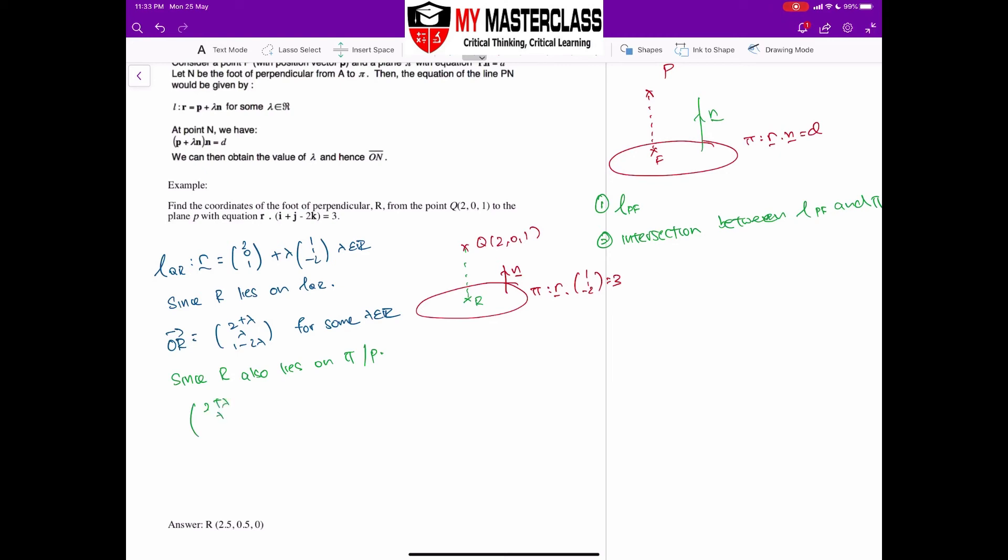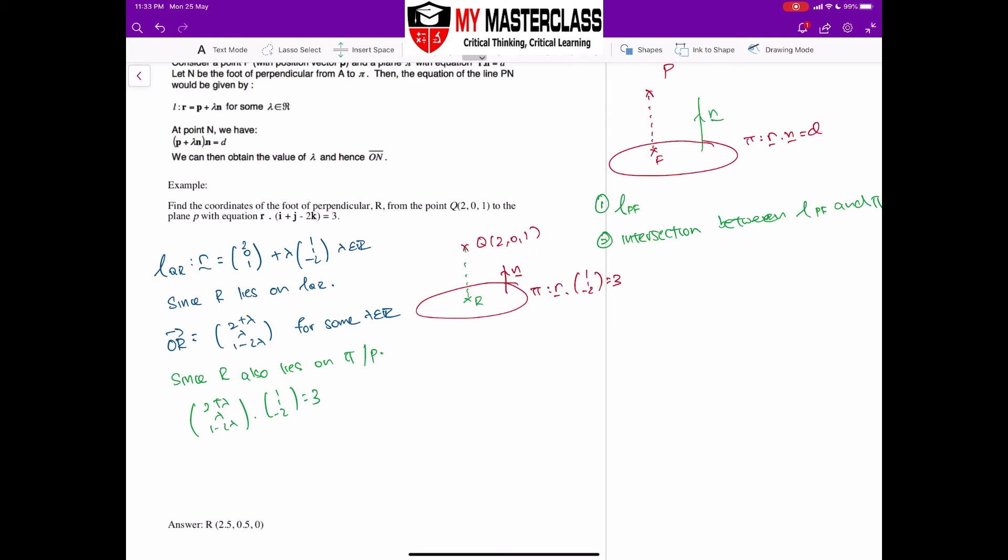(2+λ, λ, 1-2λ) dot with my normal will give me 3. Since any point that lies on the plane dot with my normal will give me the constant at the back, I take OR dot with my normal, I should get 3 since R lies on the plane as well.